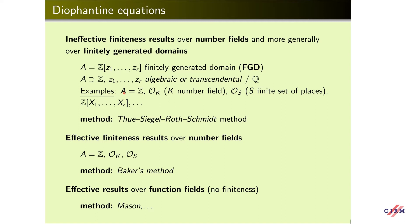Important examples are when A is Z, or the ring of integers of a number field, or S-integers, polynomial ring over Z, and so on.